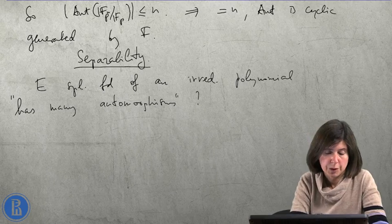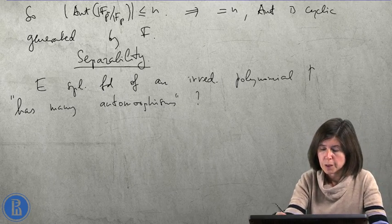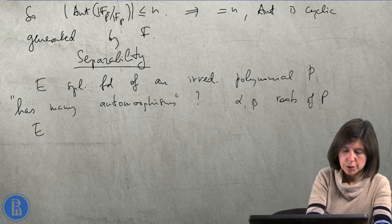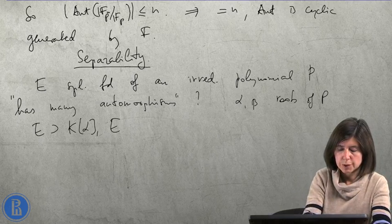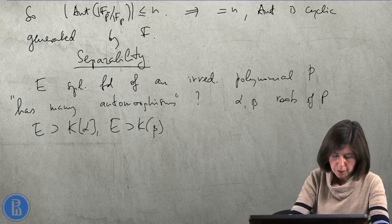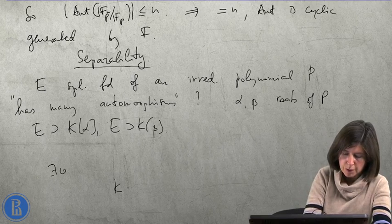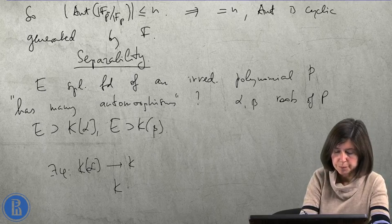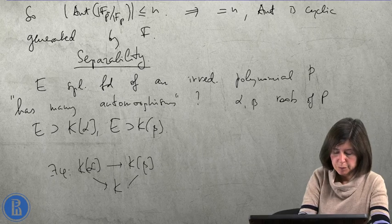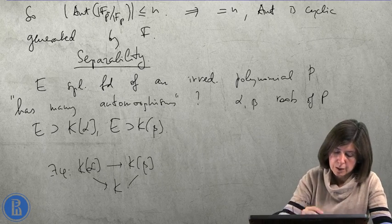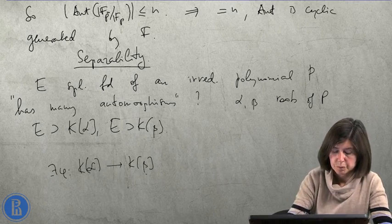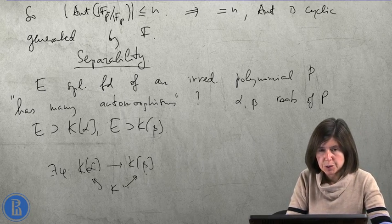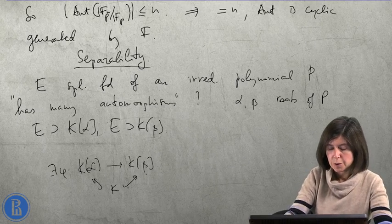What do I mean by this? I mean the following thing. If alpha and beta are roots of P, then E contains K(alpha) and K(beta). And I also have an isomorphism of K(alpha) with K(beta) over K. And by the extension theorem, I can extend it to an automorphism of E.